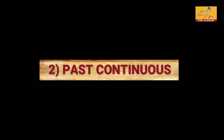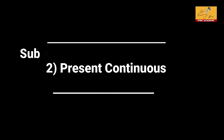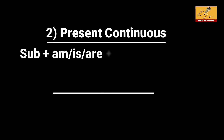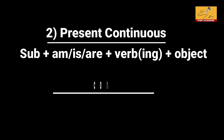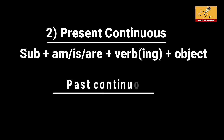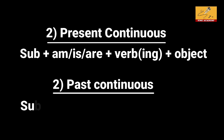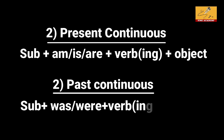Now, past continuous. It uses the ing form of the verb. For present continuous the structure is: subject plus am/is/are plus ing form of verb plus object. For past continuous, the only difference is we replace am/is/are with was/were. Structure: subject plus was/were plus ing form of verb plus object.